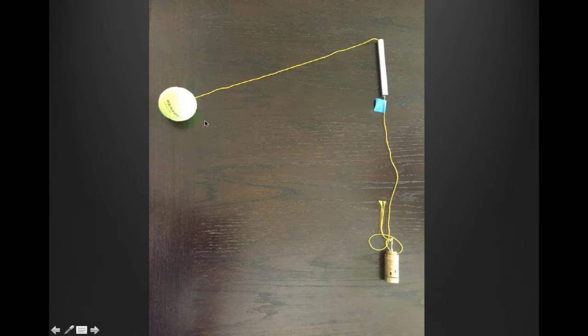The apparatus is fairly simple. The tennis ball is attached to a string which passes through a tube. Some weights are attached at the other end of the string. A blue tape attached to the string just below the tube is movable and serves as a marker for constant radius.